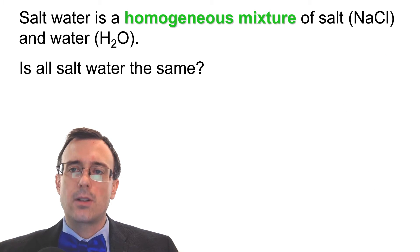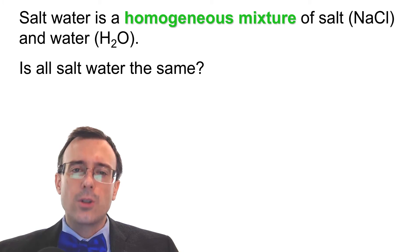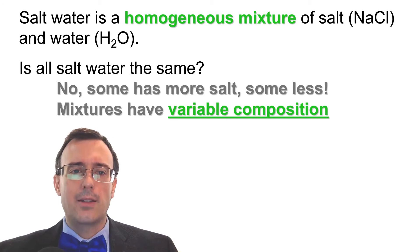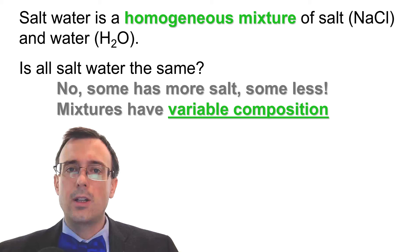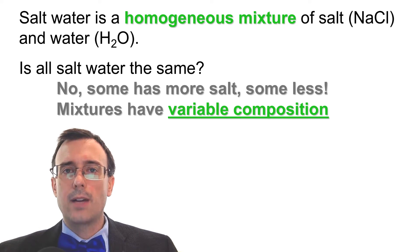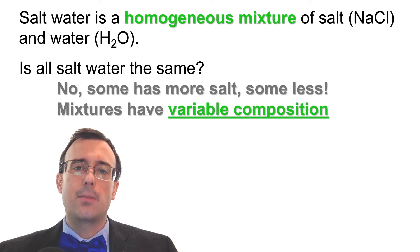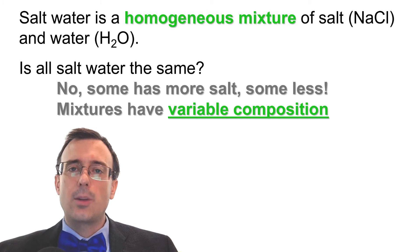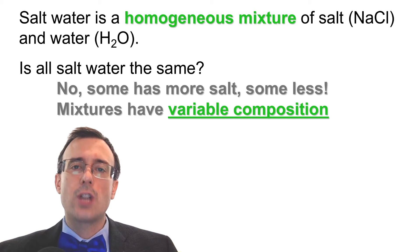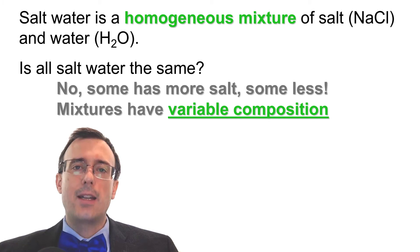Salt water is a homogeneous mixture of salt and water — both are compounds. Is all salt water the same? The answer is no. Some has more salt, some has less. You can make your own salt water, you can go to the ocean, and various different parts of the ocean might have different amounts of salt. There are some inland lakes that have a lot or a little bit of salt. Salt water can vary quite a bit going from place to place — it has variable composition. Like salt water, mixtures in general have variable composition; there's no one fixed salt water.